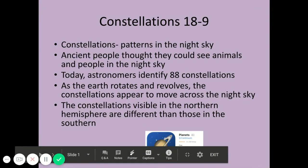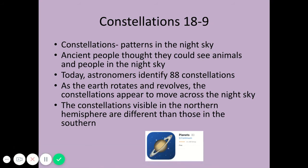This lecture is on constellations, chapter 8 section 9 in the textbook. A constellation is a group of stars in the night sky that form a pattern — it might look like an animal or a human. The root 'con' means 'with' and 'stella' means star, so a constellation is a group of stars together forming a pattern. Ancient people saw animals and people in the night sky and developed myths around them. Today, astronomers identify 88 constellations, which serve as an easy way to locate other stars or objects in the night sky.